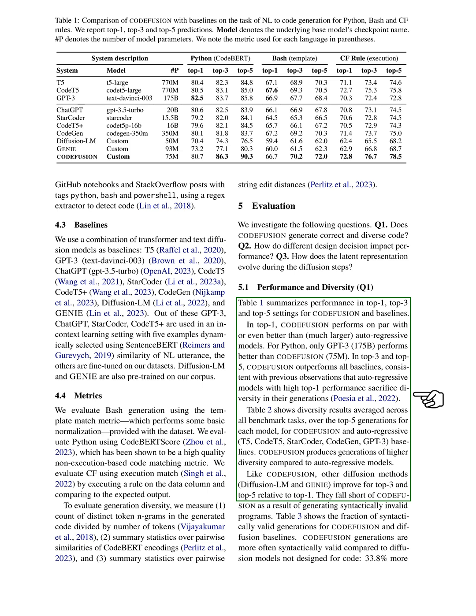In the top-3 and top-5 categories, our system outperforms all baseline systems. This aligns with previous observations that auto-regressive models with high top-1 performance often sacrifice diversity in their output.